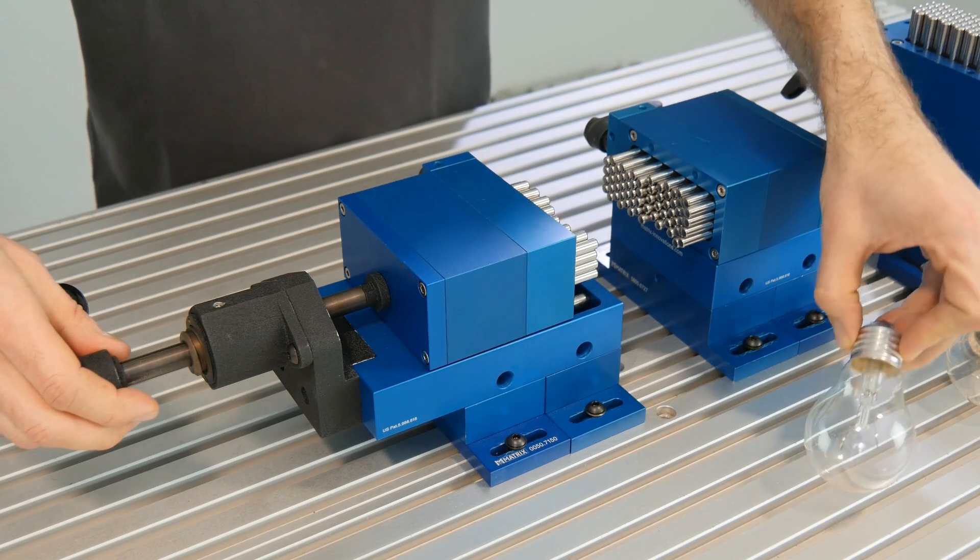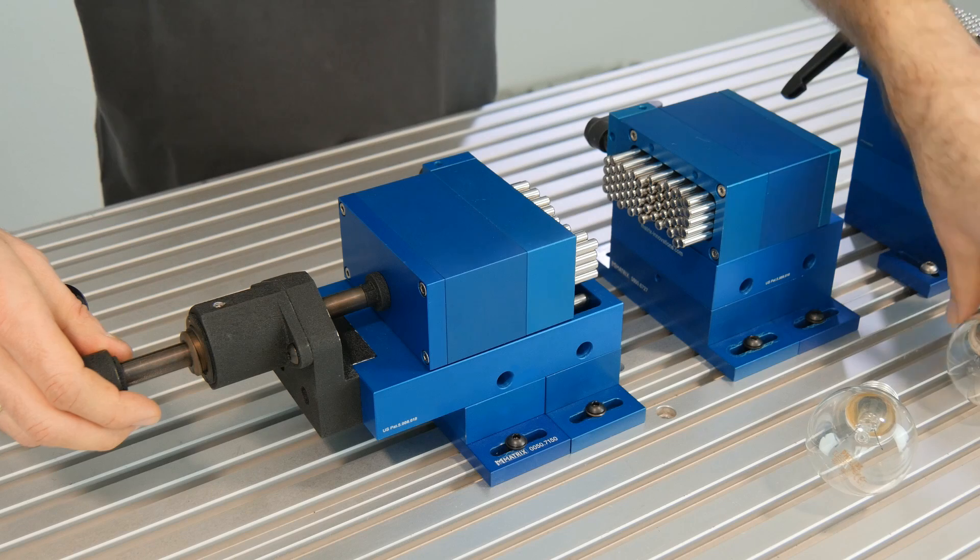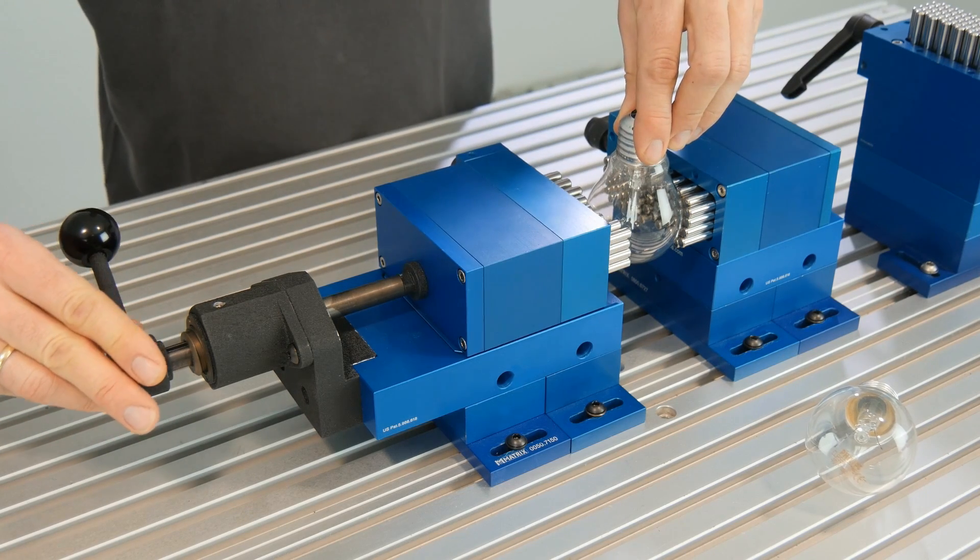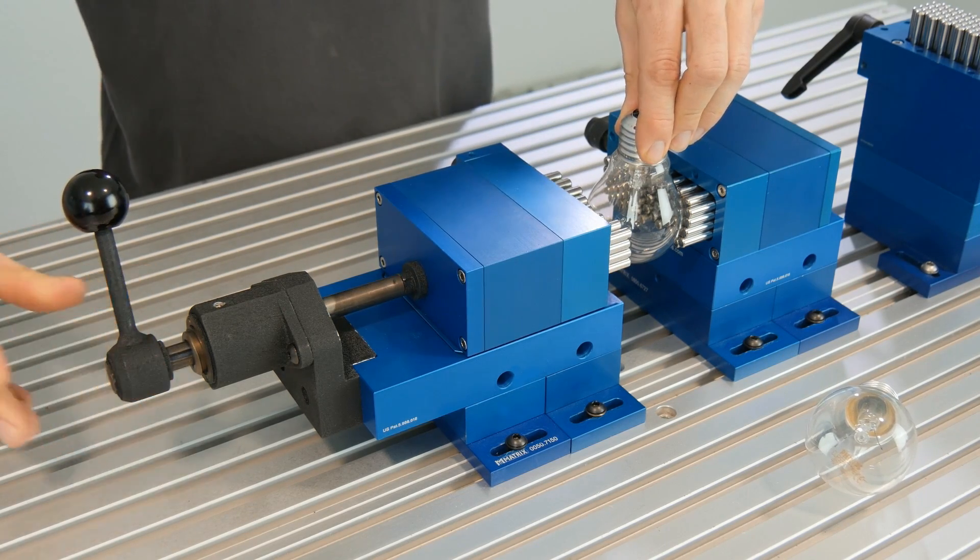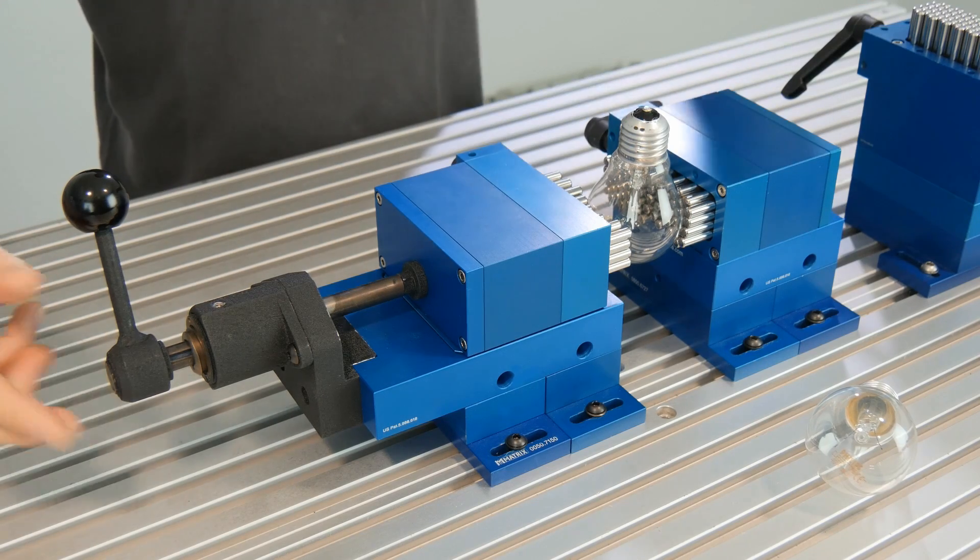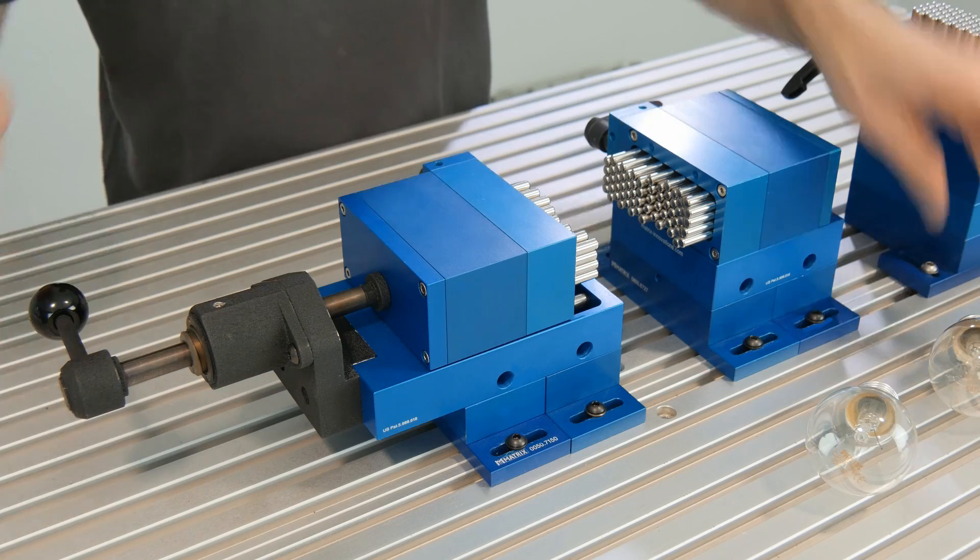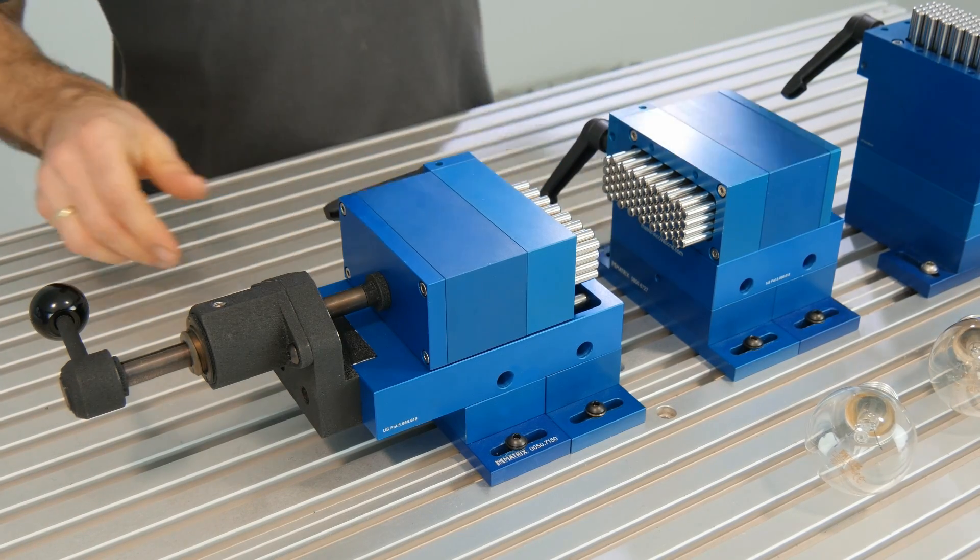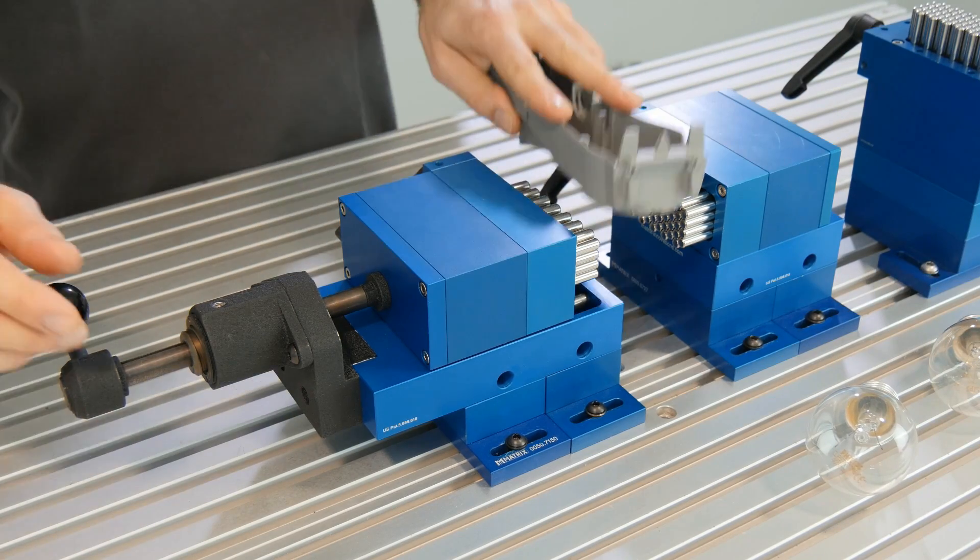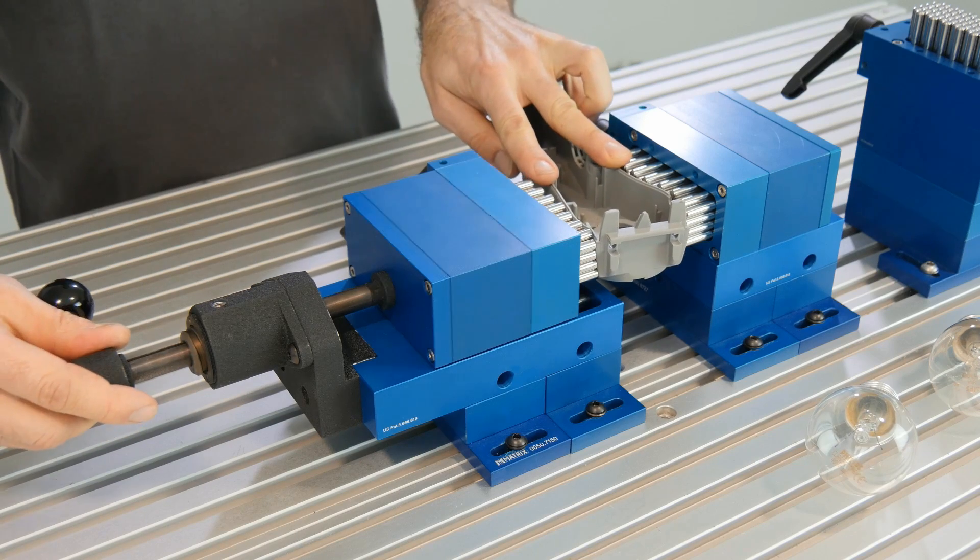Now the secured pin field is ready for the next shape identical component. If you want to clamp a new component, just loosen the fixing screw and the pins return to their starting position. Thereby the new component with a different geometry can be picked up.